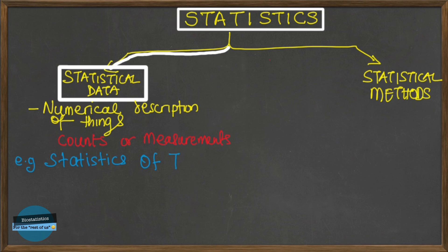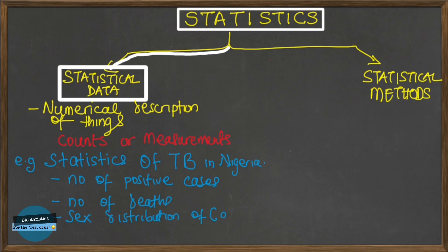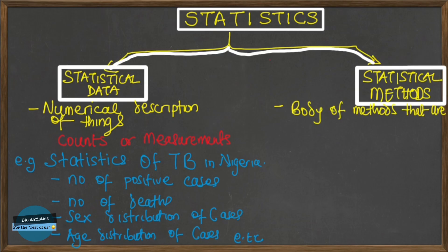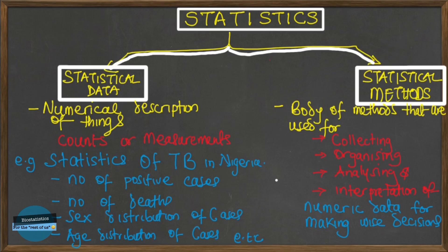For example, when we say the statistics of tuberculosis in Nigeria, this would mean the number of positive cases, the number of deaths, the sex distribution of cases, the age distribution of cases, and so on. On the other hand, when statistics refers to statistical methods, this is a body of methods used for collecting, organizing, analysis, and interpretation of numerical data for decision making.